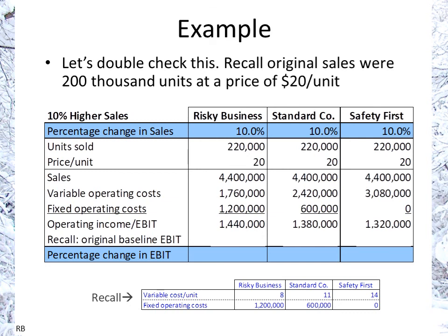Looking at the original baseline EBIT of $1.2 million in all cases, the increases are $240,000, $180,000, and $120,000 — that's 20%, 15%, and 10%. So the percentage change in EBIT does reflect the degree of operating leverage times the percentage change in sales.